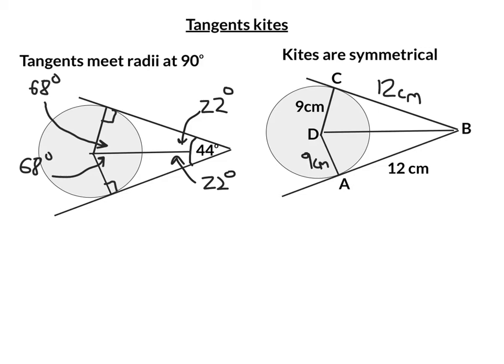Now to work out what DB is, remember that our tangents meet our radii at right angles. So I've got two right angle triangles here where BD is the hypotenuse. So I'm going to use a little bit of Pythagoras to work out what BD is. So that's going to be 9 squared plus 12 squared. BD squared is then going to be equal to 225, so square root 225 is 15 centimeters. So BD is 15 centimeters.